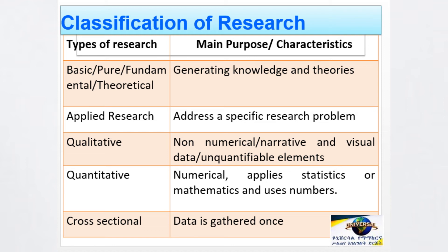The other approach is quantitative research. Under the quantitative research approach, we can employ different mathematical models and statistical elements to conduct research. For example, the relationship between one variable and another, or the effect of one variable on another, can be investigated using mathematical and statistical elements. This kind of research approach is called the quantitative research approach.